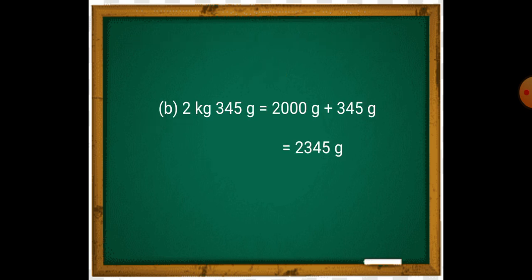Another example. 2 kg and 345 grams. Convert into one unit. Smallest unit is grams. Convert into grams.